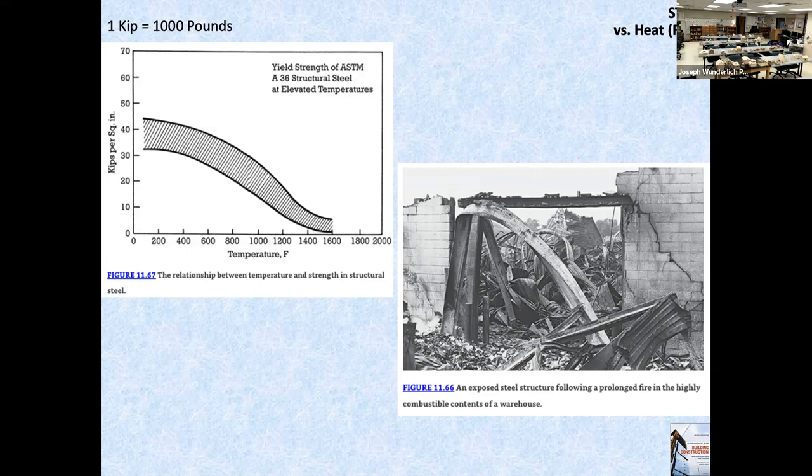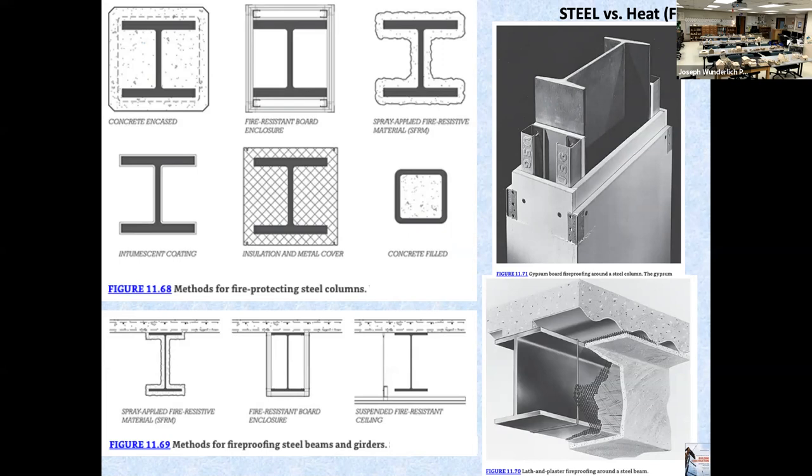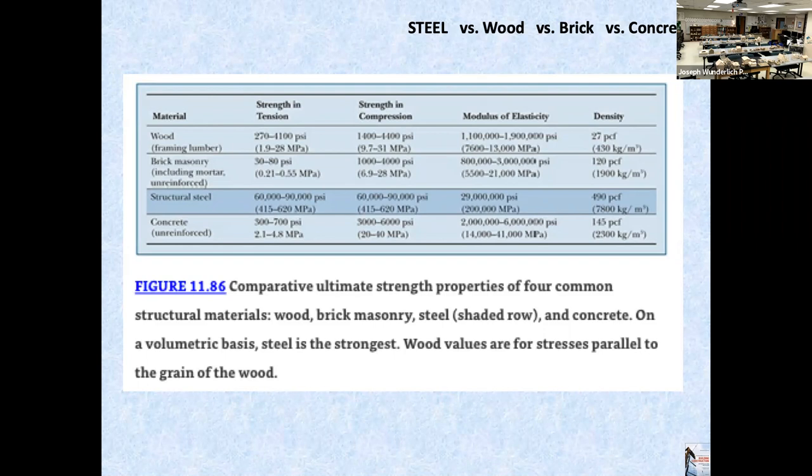Steel versus fire — this is something to consider. Steel will melt if it gets very, very hot — not just normal outdoor temperatures, but fire hot. There are ways of fireproofing it; you can see various methods here. And there is a comparison of steel versus wood versus brick versus concrete — steel is definitely the strongest.